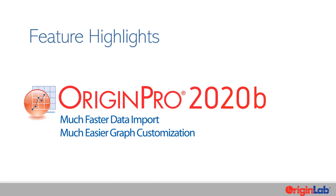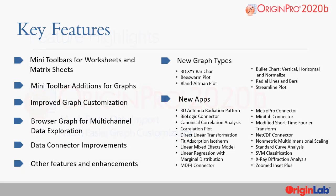Origin Lab is proud to announce the release of Origin and Origin Pro 2020 B, end of April 2020. Key new features in this version include mini-toolbars for worksheets and matrix sheets, mini-toolbar additions for graph editing, improved graph customization features, a browser graph for multi-channel data exploration, several data connector improvements, and many other features and enhancements along with several new graph types and new apps.